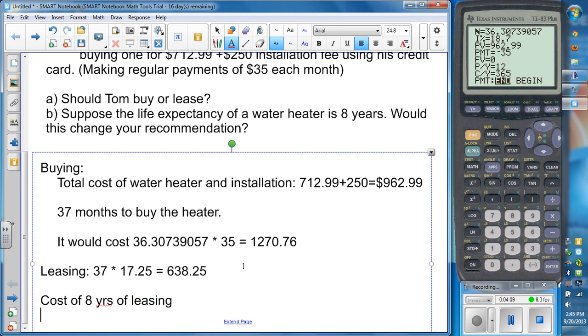So the cost of eight years of leasing is going to be $17.25 times 12 months in a year times eight years, which works out to $1,656.